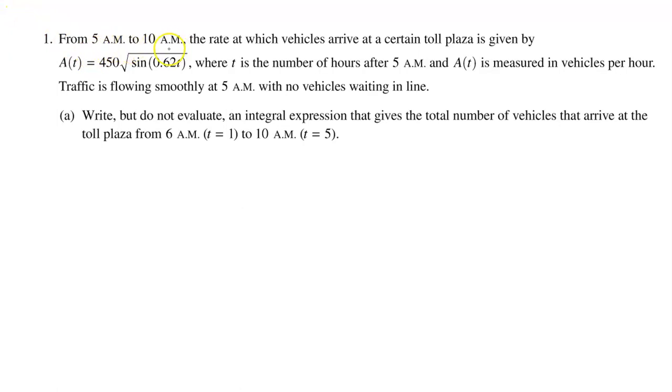From 5 a.m. to 10 a.m., the rate at which vehicles arrive at a certain toll plaza is given by A(t) equals this expression, where t is the number of hours after 5 a.m., and A(t) is measured in vehicles per hour. Traffic is flowing smoothly at 5 a.m. with no vehicles waiting in line. Part A: Write but do not evaluate an integral expression that gives the total number of vehicles that arrive at the toll plaza from 6 a.m., t equals 1, to 10 a.m., t equals 5.